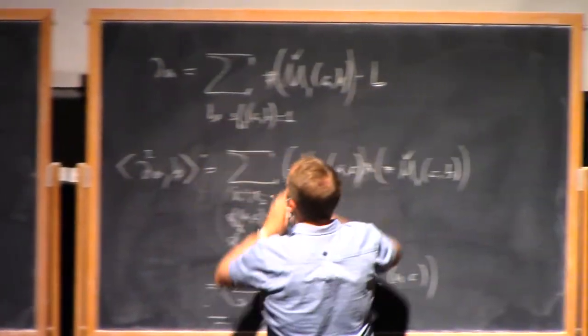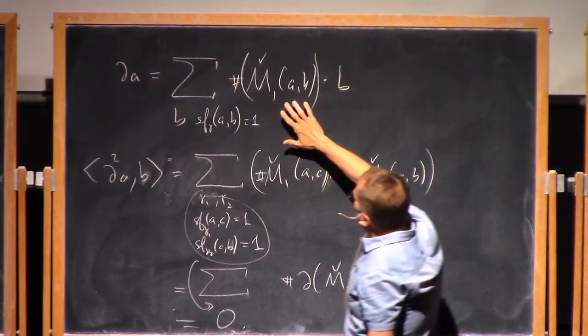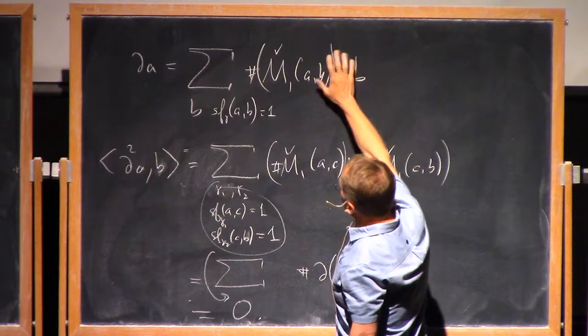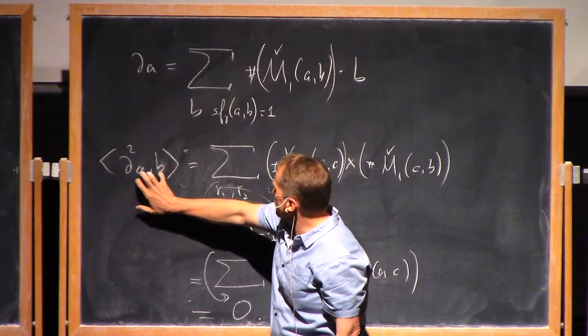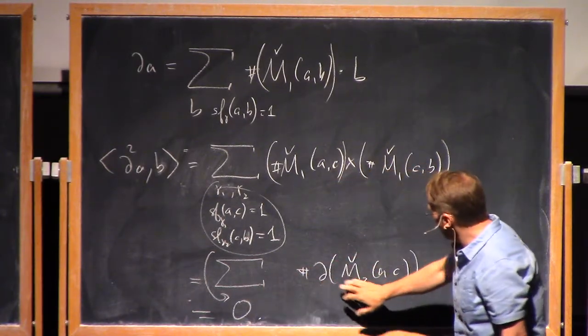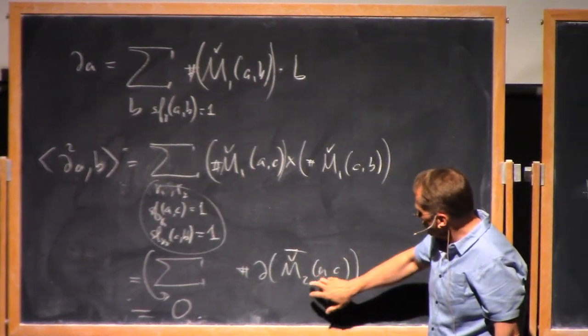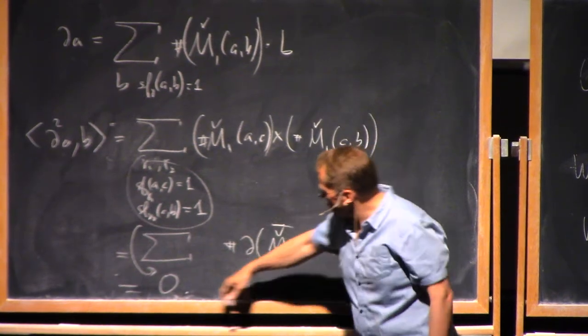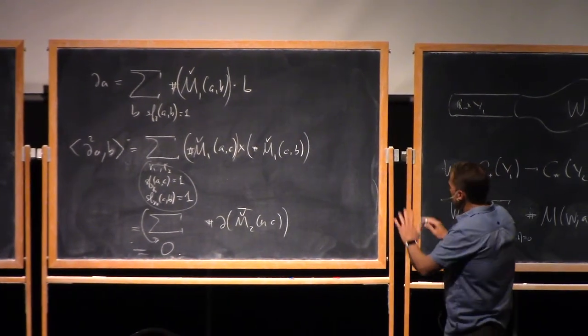And then I just want to recap why d squared is zero. The definition of d, the differential on our potential complex, is that we count the number of trajectories in one-dimensional moduli spaces from a to b, sum over b, and that's our answer. And you notice that if I look at the matrix element for d squared from a to b, then we're just summing over all c that are allowed breaks, and that's the boundary of the compactification of the two-dimensional m2 mod translation. The boundary, well, at least it's zero mod two. This is a one-manifold. It has two ends. I mean, pairs of ends. Even number of ends. So d squared is zero, so this gives us our complex.